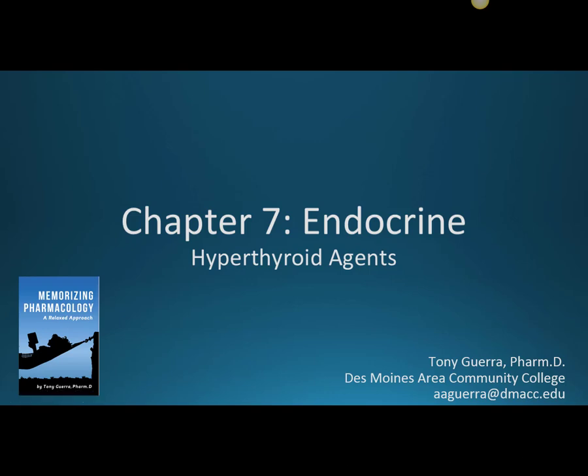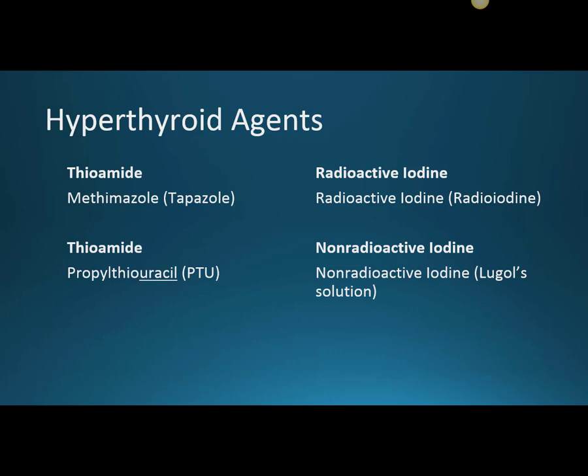In Chapter 7, we begin to talk about our endocrine system, and in this video specifically, we will be talking about our hyperthyroid agents. The main categories we'll be discussing are our thioamides and then two different types of iodine: our radioactive iodine and our non-radioactive iodine.